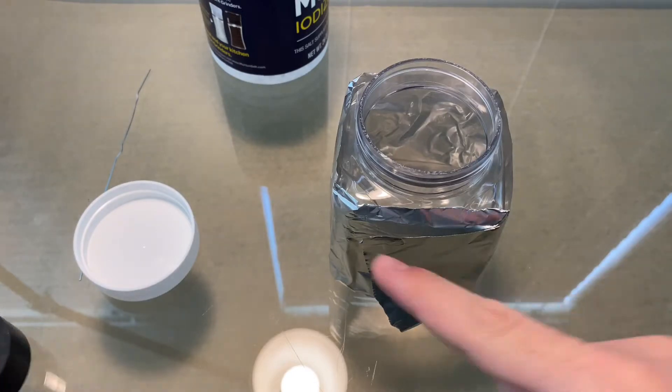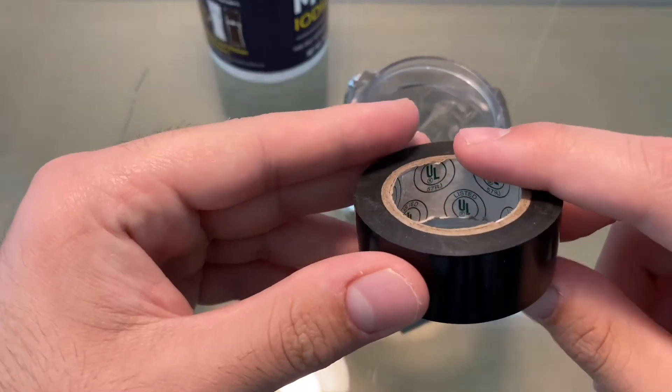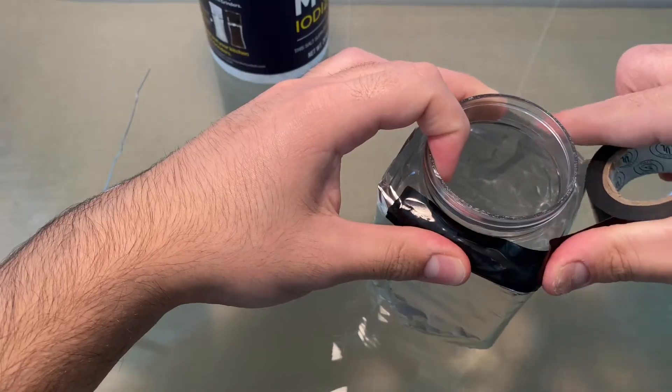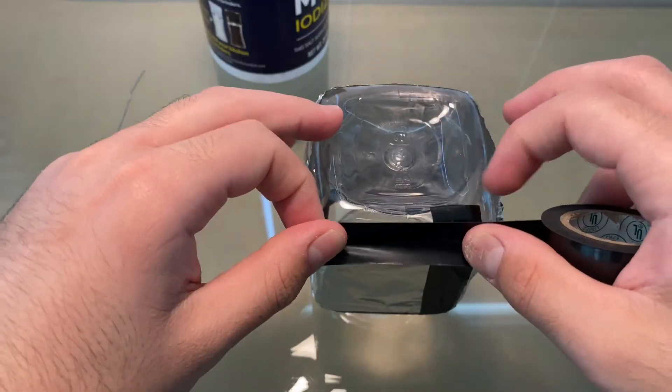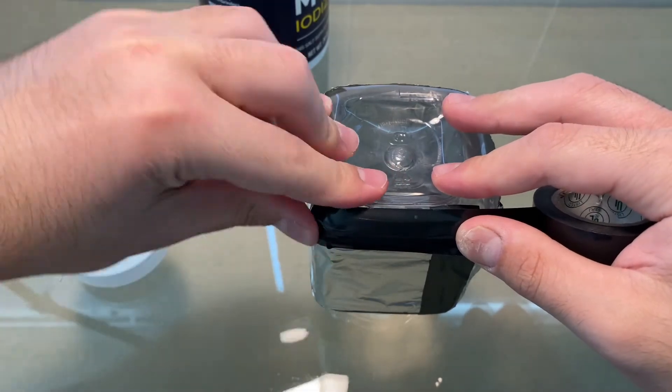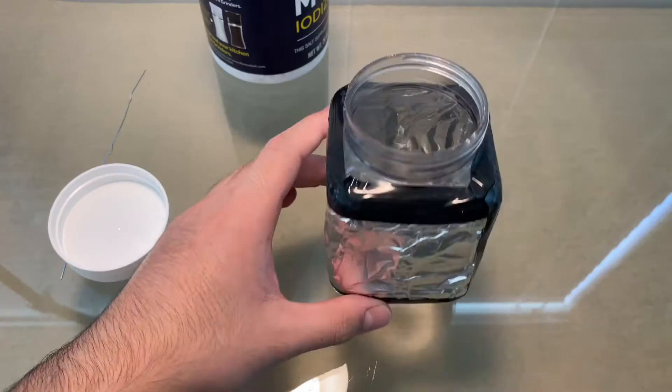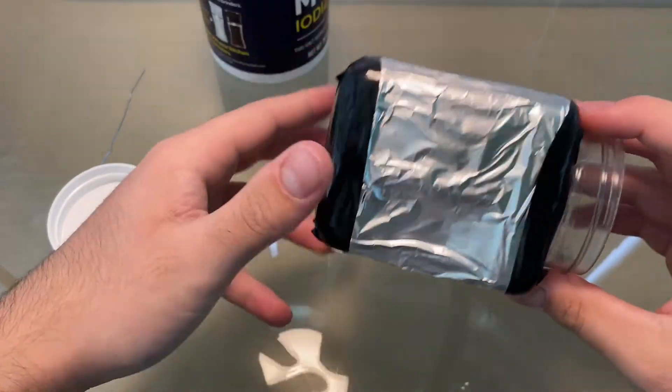Then you want to wrap these rough edges with electrical tape. Make sure to do the same with the bottom. This should be what it looks like.